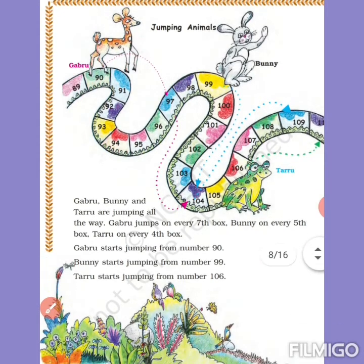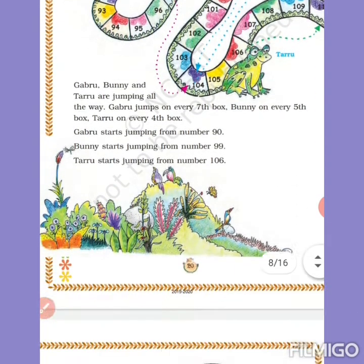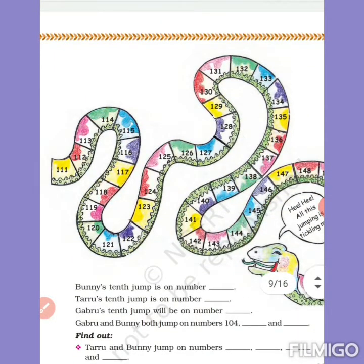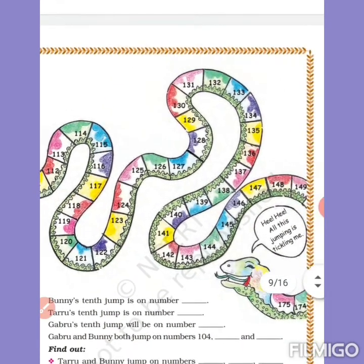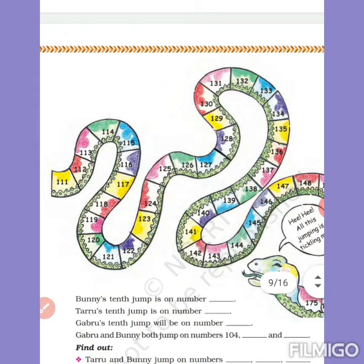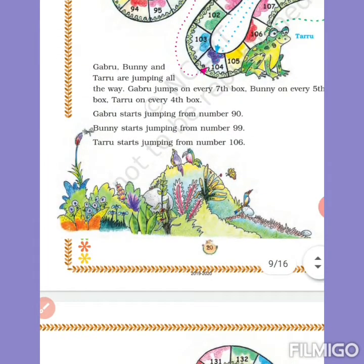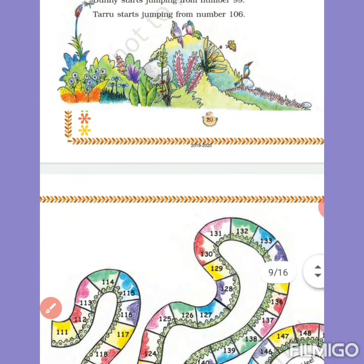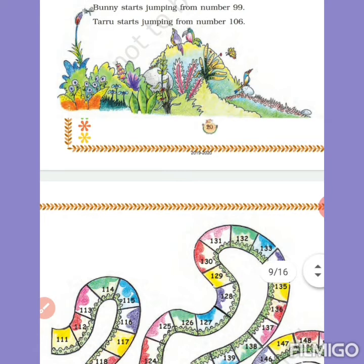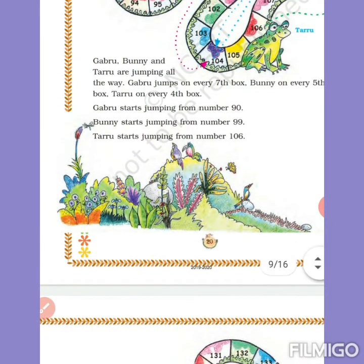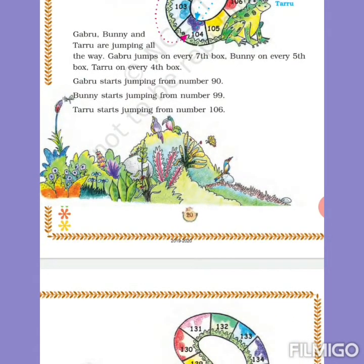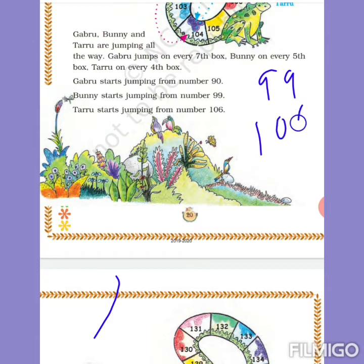They have shown where Gabru, Bani and Taru are, and you have to fill in their digits going forward. Now you need to find Bani's 10th jump. For this you must calculate all of Bani's jumps. Bani starts at 99 and jumps every 5 boxes. So write Bani: 99. First jump: add 5, so 104.